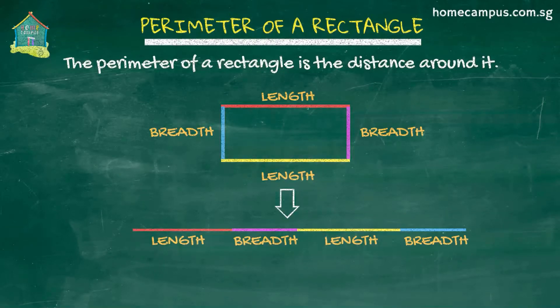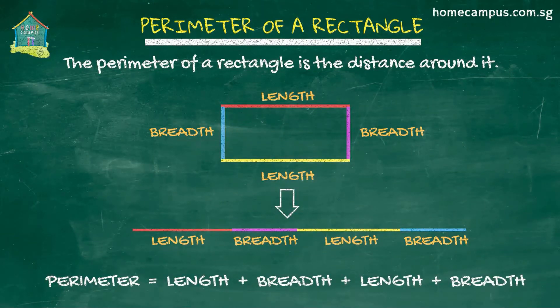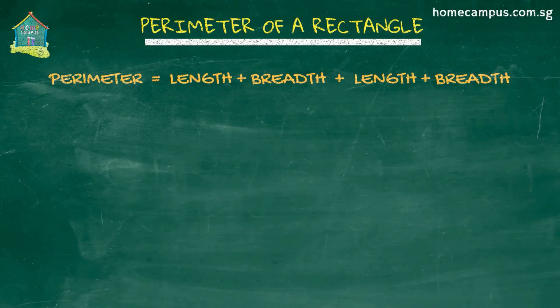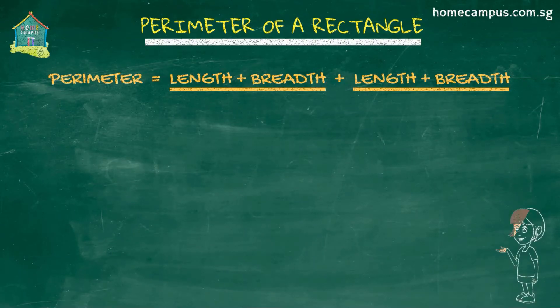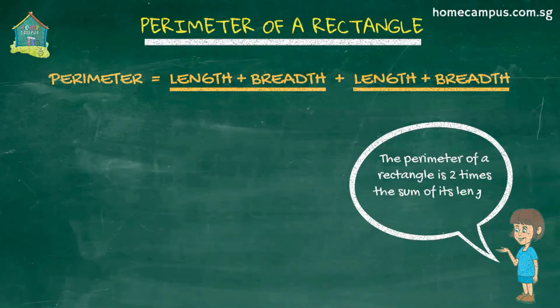If we lay the sides of this rectangle next to each other, then the perimeter of this rectangle would be its length plus breadth plus length plus breadth. Or if we simplify this equation, then we see that the perimeter of a rectangle is two times the sum of its length and breadth.